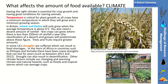There are six factors you need to consider for what governs the amount of food available. The first obvious one is climate. Temperature is critical for plant growth, as all crops have a minimum temperature in which they will grow and a minimum growing season.